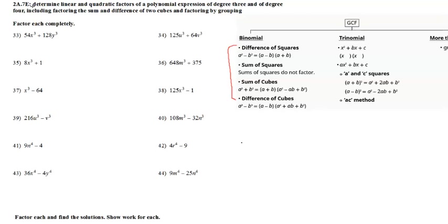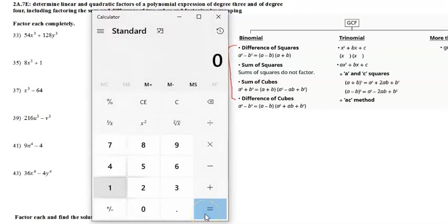Looking at number 33, we have 54x³ + 128y³. The first thing you want to do before anything else is to see if you can factor out a greatest common factor. These are both even numbers, so you can take out 2. Let's see if we can take out an even bigger number.